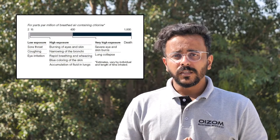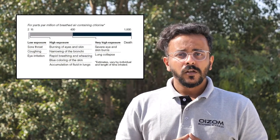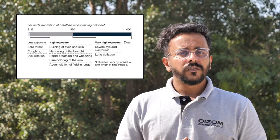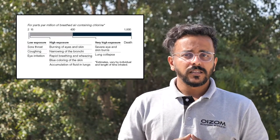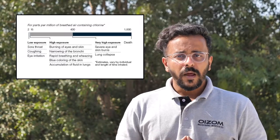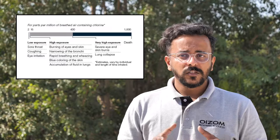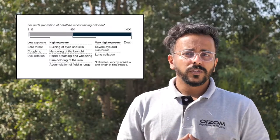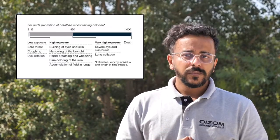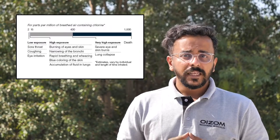Low-level exposure to chlorine causes eye, skin, and respiratory tract irritation, sore throat, coughing, and so on. Higher levels of exposure cause burning of eyes and skin, chest tightness, narrowing of bronchi, rapid breathing, wheezing, blue coloring of the skin, and so on. Very high exposure may cause severe burns to eyes and skin, lung collapse, non-cardiogenic pulmonary edema, and may lead to death.